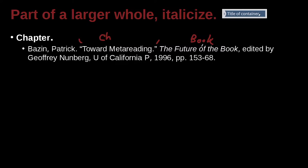Now who wrote the book? Well, the book is written by different people because they have different chapters. The book was put together, edited by someone, and that editor is here — comma, edited by Jeffrey Nuenberg. Just one editor, first name first, last name last. We do not reverse it. We only reverse the name at the very beginning. The publisher is University of California P — P means Press. And the year it was published was 1996.